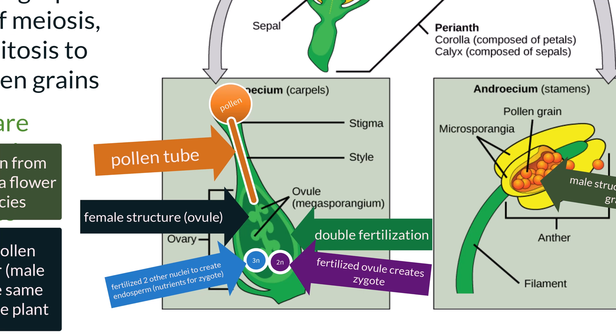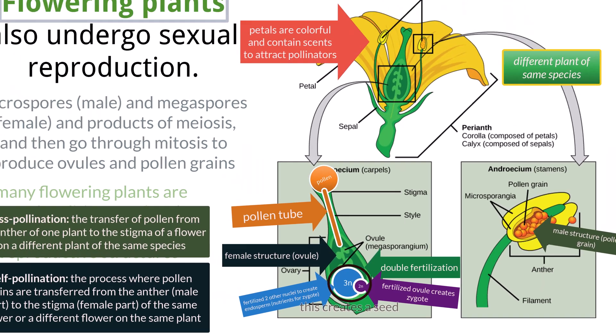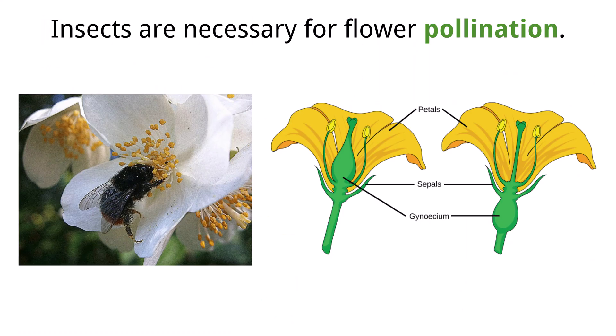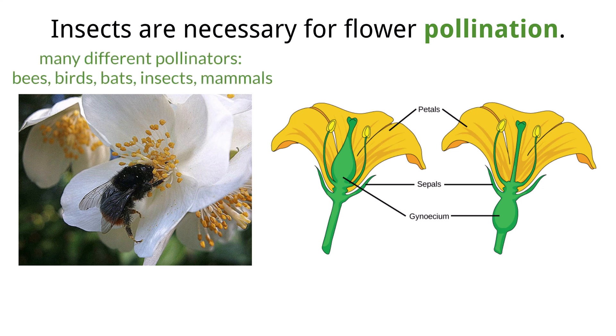Because of this, the endosperm is triploid, with a chromosome number of 3N. This produces the endosperm, which is needed by the embryo for nutrition. There are many different pollinators — bees, birds, bats, insects, and some mammals. We will concentrate on flowers using insects such as bees, wasps, butterflies, and moths.